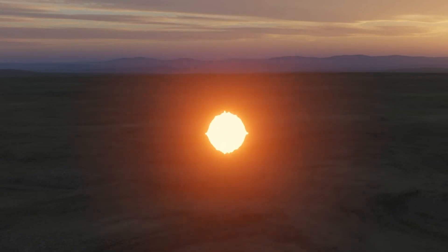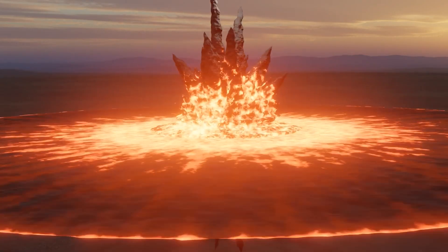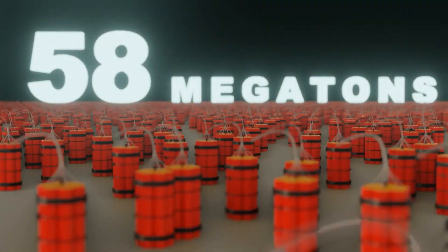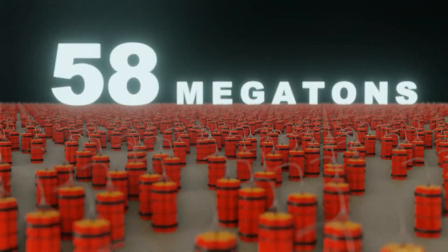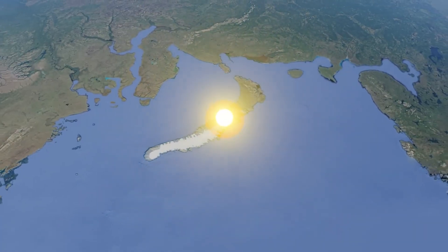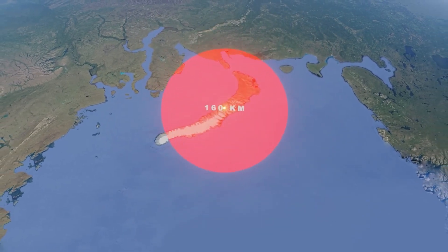Is Russia's Tsar Bomba ever going to be used? It was used. The Soviets detonated a version of Tsar Bomba that had a yield of between 50 and 62 megatons in the Novaya Zemlya archipelago on 30th October 1961.